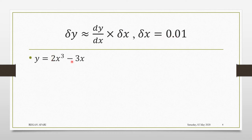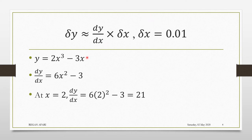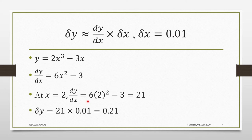Given the curve, let's differentiate to find dy/dx. So dy/dx gives us 6x² − 3. Remember that the change started from 2 to 2.01, so the beginning x value is 2. At x = 2, dy/dx gives you 21. All we need to do is input dy/dx, which is 21, and multiply by delta x, which is 0.01. This gives us 0.21.